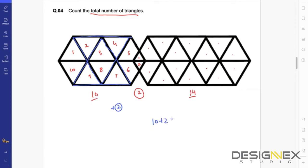So let's do the total: 10 plus 2 plus 14 plus 2. That makes up 28.